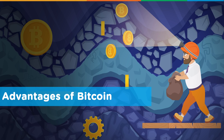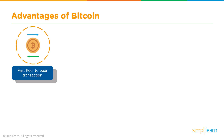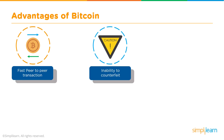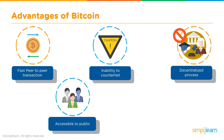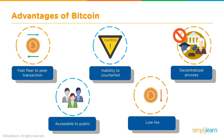The advantages of Bitcoin include fast peer-to-peer transactions and it is impossible to counterfeit or hack transactions running on the Bitcoin network. It is an overall decentralized process — no centralized body controls transactions or charges fees to validate them. Participants in the decentralized network maintain the sanity of the network, keeping overall transaction costs low. All information is accessible publicly on a public ledger, and transaction fees are comparatively low relative to other digital payment channels.